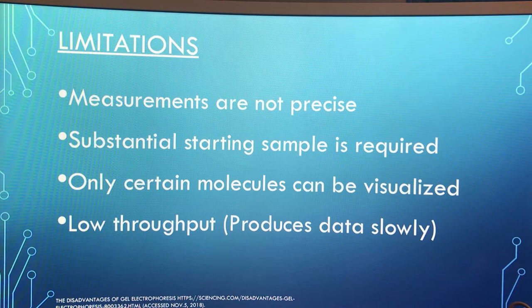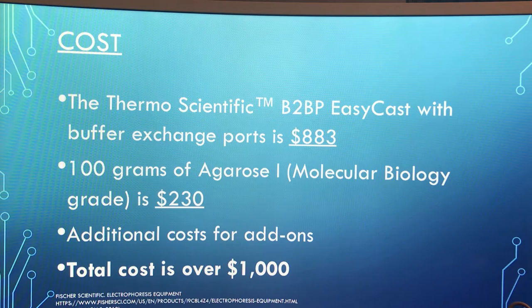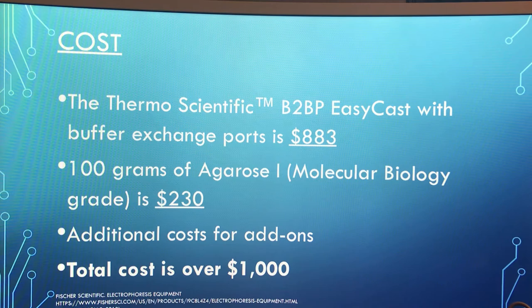The cost. The Thermo Scientific B2BP EasyCast with buffer exchange ports is $883. 100 grams of agarose-1 molecular biology grade is $230. There are additional costs for add-ons, making the total cost over $1,000.